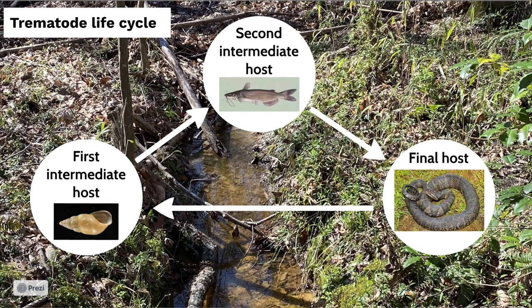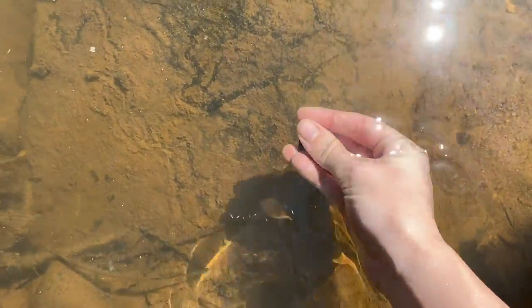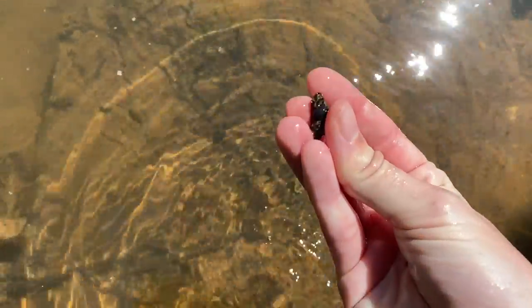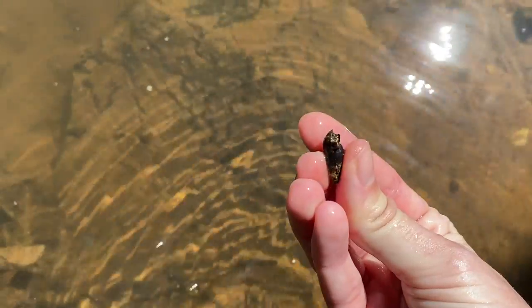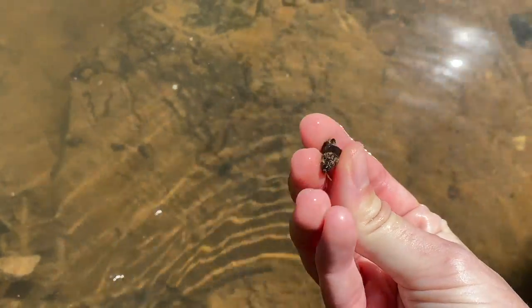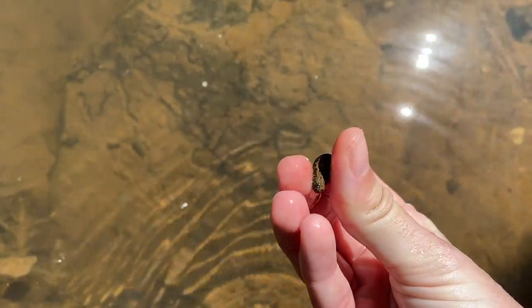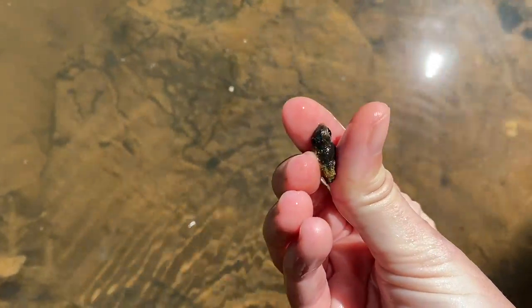So all three of these hosts are necessary. If there are no banded water snakes in the ecosystem, then the parasite's life cycle cannot continue. But if we sample easy-to-find snails and find the parasite, then we can infer that there must be banded water snakes in the system without ever having to sample them directly.